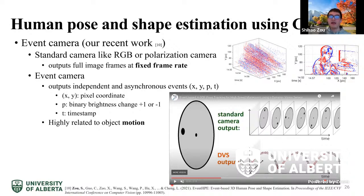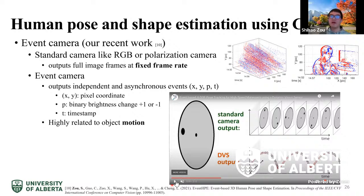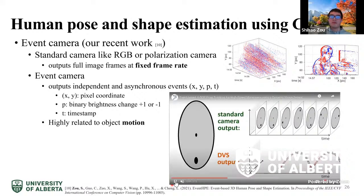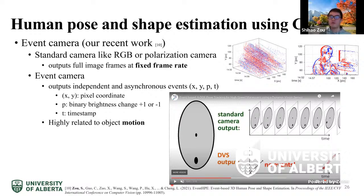A video demonstrates the difference between standard and event cameras. A black dot rotates around a cone. The standard camera outputs full frames at fixed rates, while the event camera only outputs events for pixels whose brightness change exceeds a threshold. When the black dot is not moving, the event camera generates no events. When the dot moves very fast, the standard camera shows motion blur, but the event camera does not, due to its very high temporal resolution.